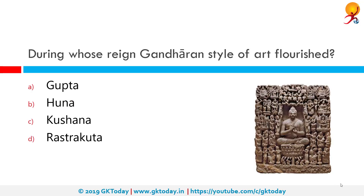During whose reign did the Gandharan style of art flourish? The correct answer is Kushana. Gandhar art is a style of Buddhist visual art that was developed in what is now north-western Pakistan and eastern Afghanistan between the 1st century BCE and the 7th century CE. The Gandhar region had long been a crossroads of cultural influence.